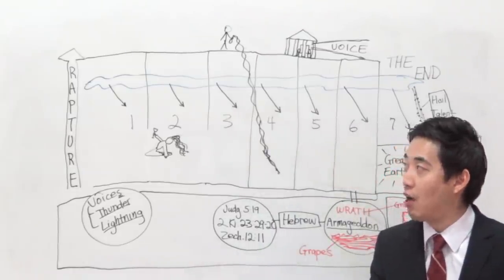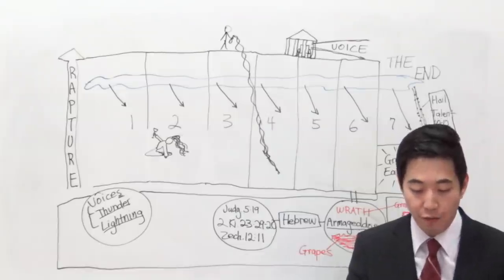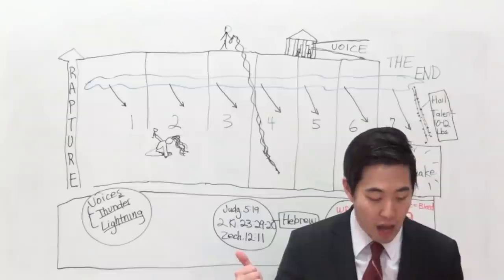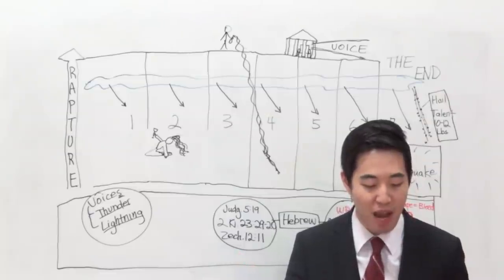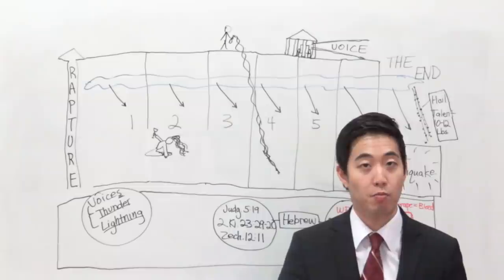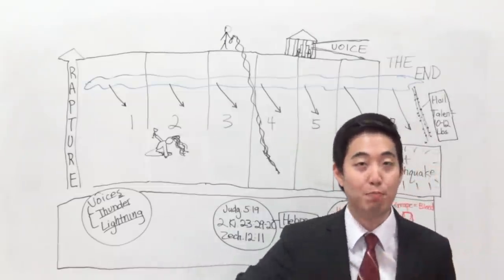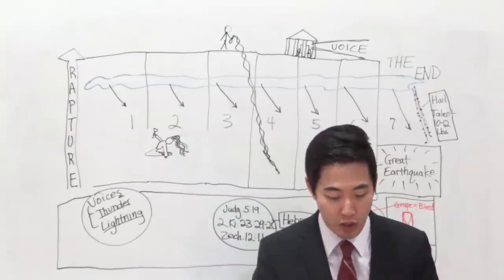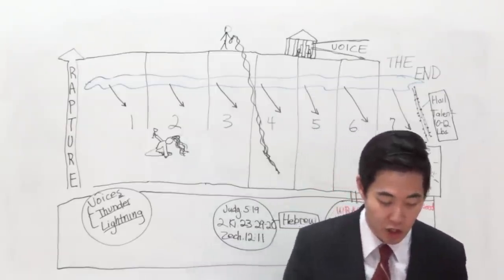Now remember, I mentioned to you before that the water where the Antichrist comes out of could be referring to the Mediterranean Sea. But people argue that it won't make sense because the waters is used as a metaphor concerning about peoples with Revelation 17.